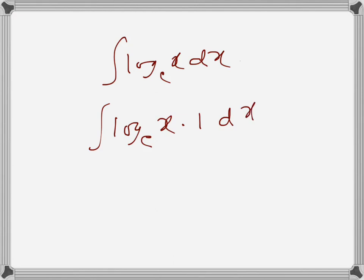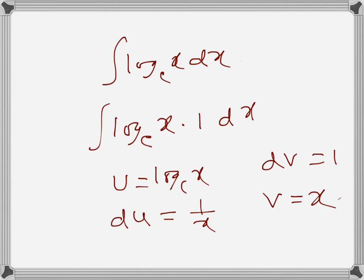We set u equal to log_e x, so du is 1 over x. And dv is 1, so v is x because that's the antiderivative of 1.